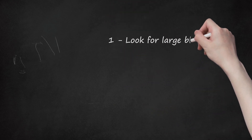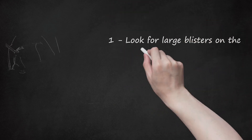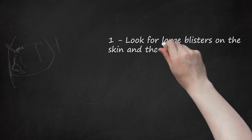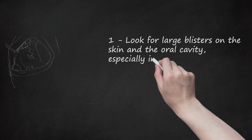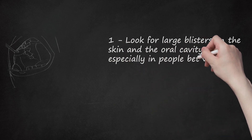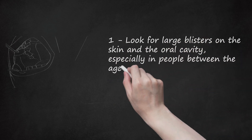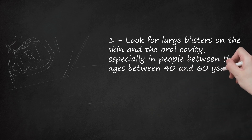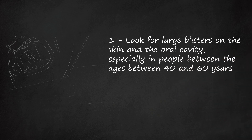Step 1: Look for large blisters on the skin and the oral cavity, especially in people between the ages of 40 and 60 years. This is a major characteristic of Pemphigus vulgaris. This is a chronic disease which is mediated by immunoglobulin G antibody, or IgG.